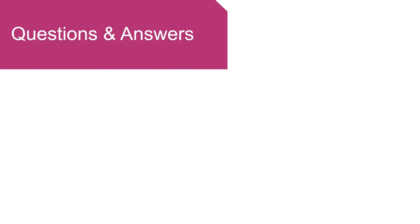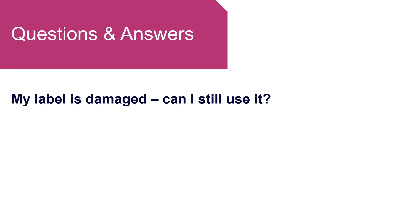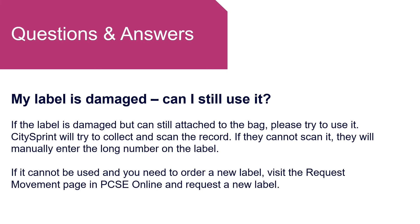I'm now going to run through some commonly asked questions and answers. My label is damaged — can I still use it? If the label is damaged but can still be attached to the bag, then please try and use it. CitySprint will try to collect and scan the record. If they cannot scan it, they will manually enter the long number on the label. If it cannot be used and you need to order a new label, visit the request movement page in PCSE Online and request a new label as previously shown in this video.